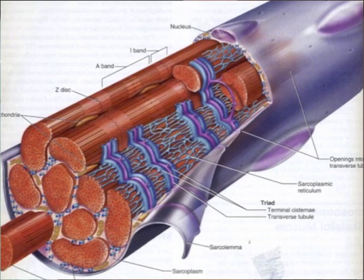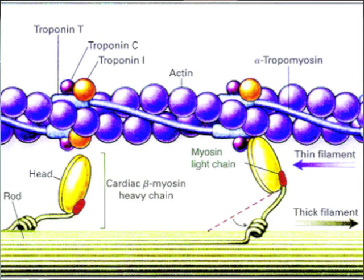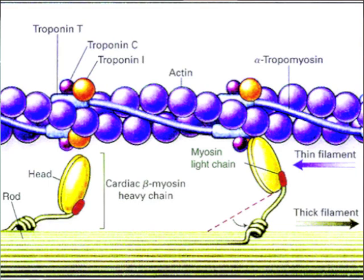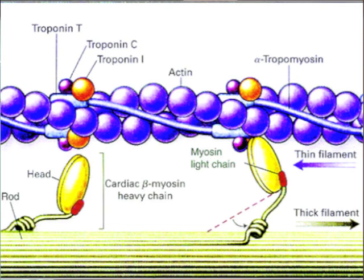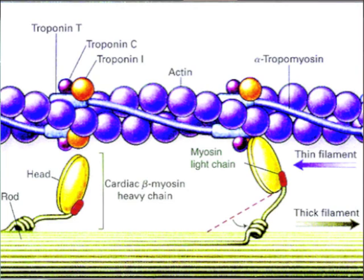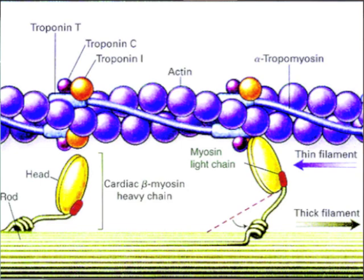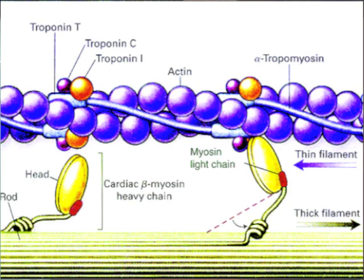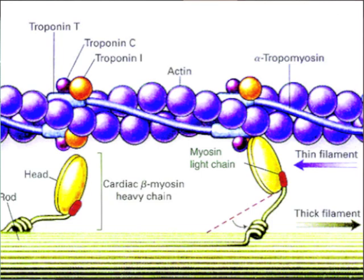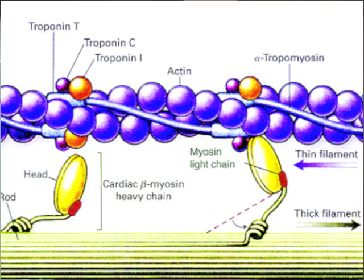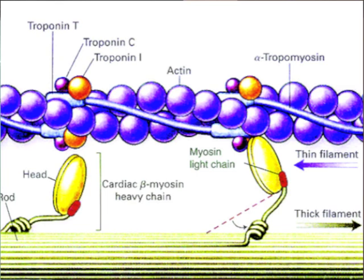The second step in the process is that there are calcium receptors on troponin. I'm going to put up another picture here. When calcium levels are low, there's no attraction between troponin and calcium. However, when the surge of free calcium is high, the calcium binds to the troponin receptors, creating a troponin-calcium complex — a whole new chemical.